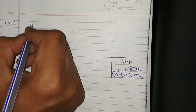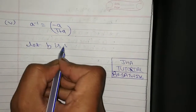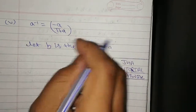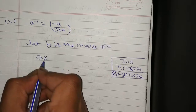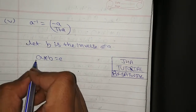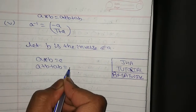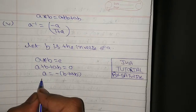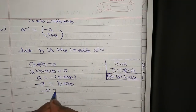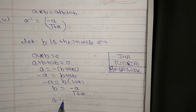Fifth part: prove that the inverse of A is -a/(1+a). Let B be the inverse of A for star on Q\ {-1}. The condition is a★B = E = 0. So a+B+aB = 0. Taking B+aB to one side: a = -B - aB = -B(1+a). Therefore B = -a/(1+a). So the inverse of a is -a/(1+a).